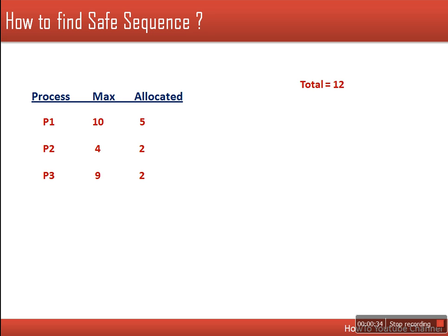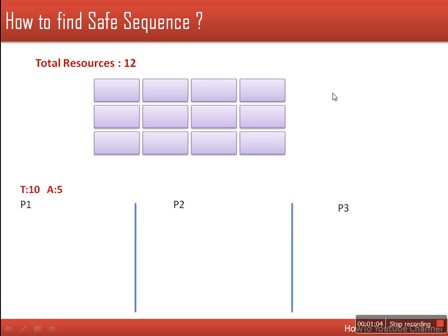Here we will see how to find this safe sequence. We are having three processes: P1, P2, P3. These specify their maximum need — process P1 is going to need 10 resources during its execution, P2 needs 4, and P3 needs 9. This is the current allocation: P1 is having 5, P2 is having 2, and P3 is having 2. The total number of resources we are having is 12.